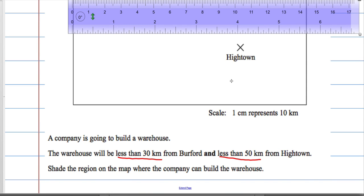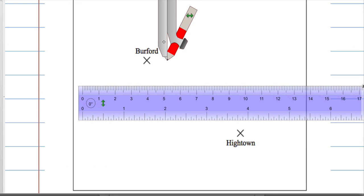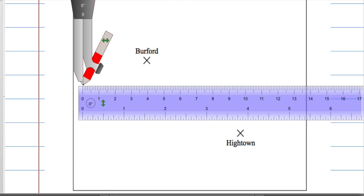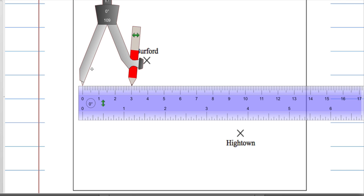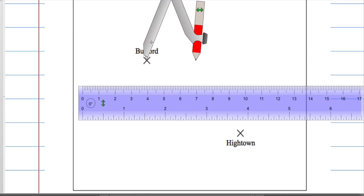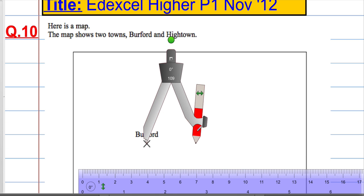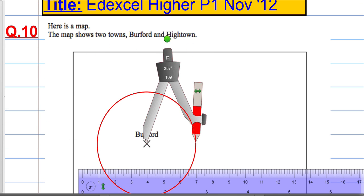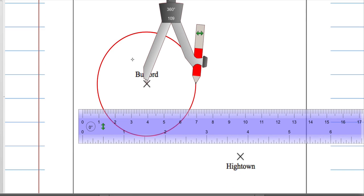Okay, 3 cm on the ruler. So I'm going to measure out 3 cm with my compass, and everywhere within the circle I'm about to draw is within 30 km, according to the scale.